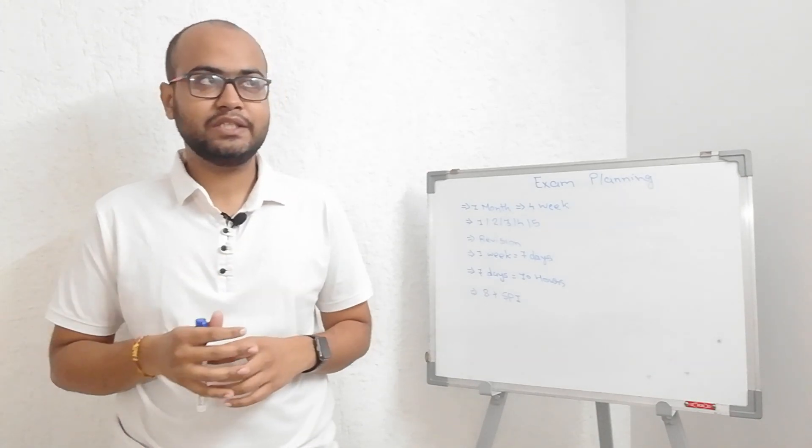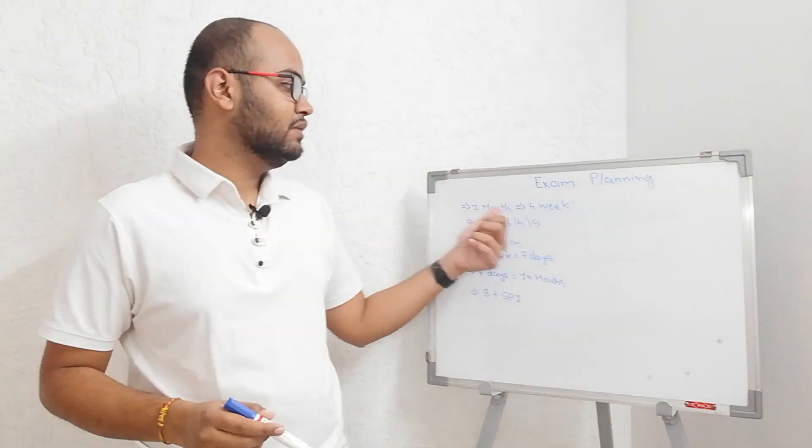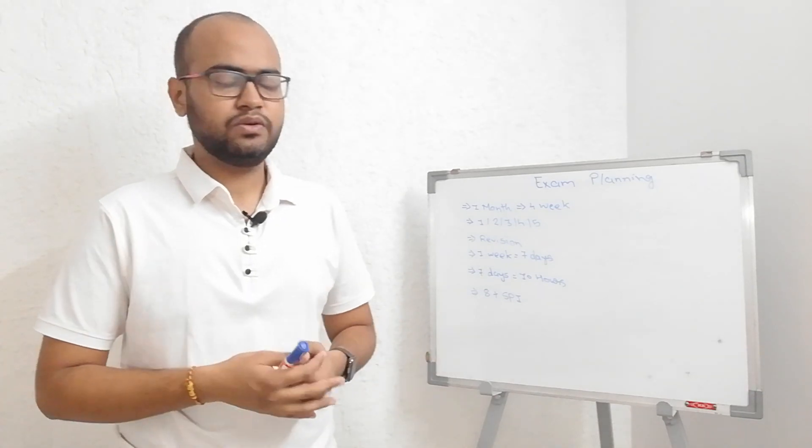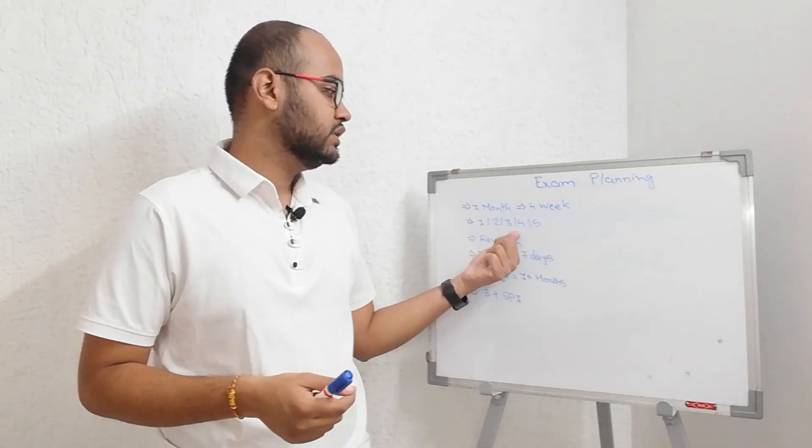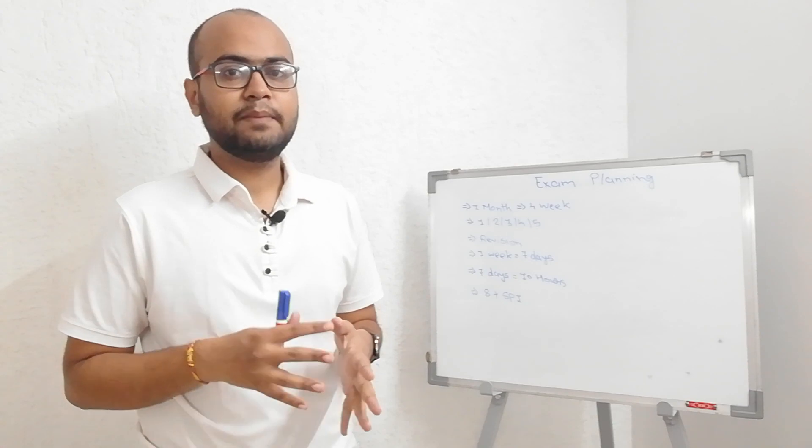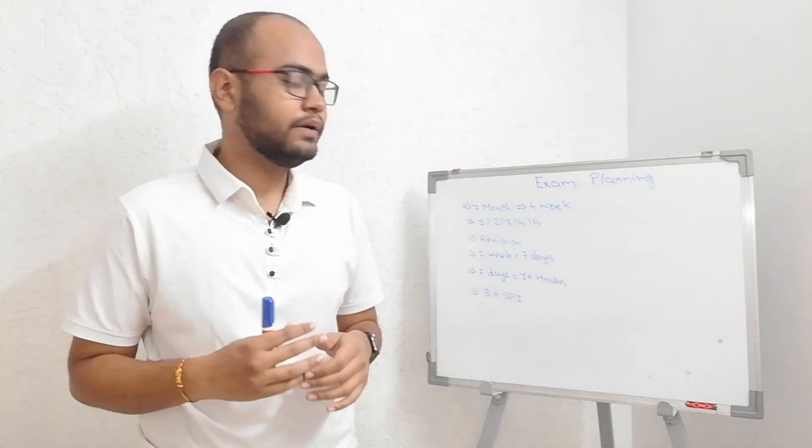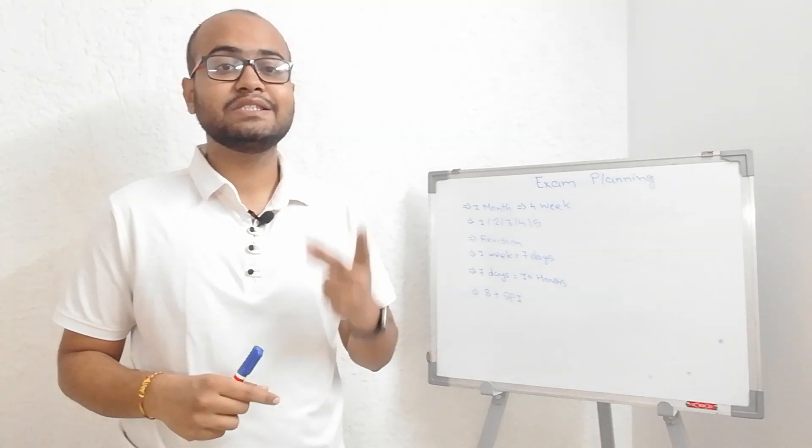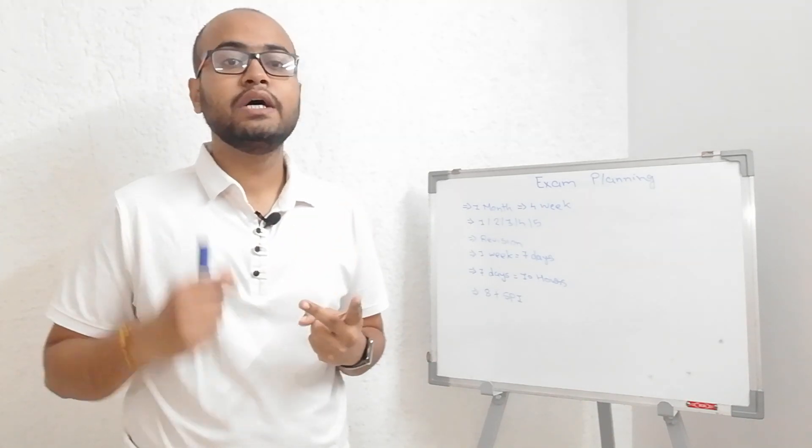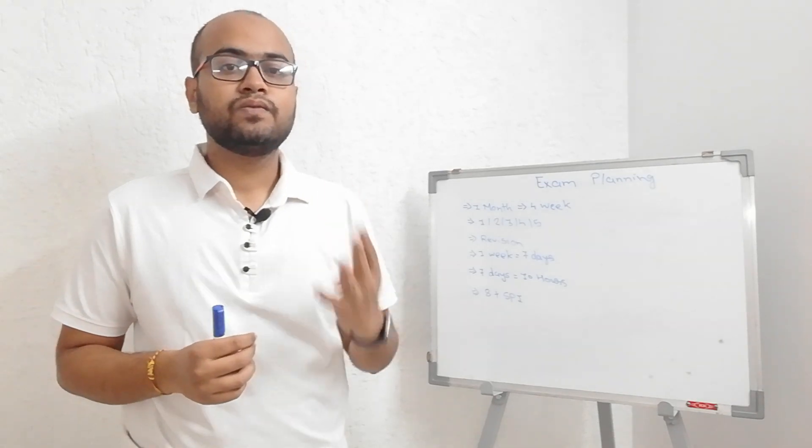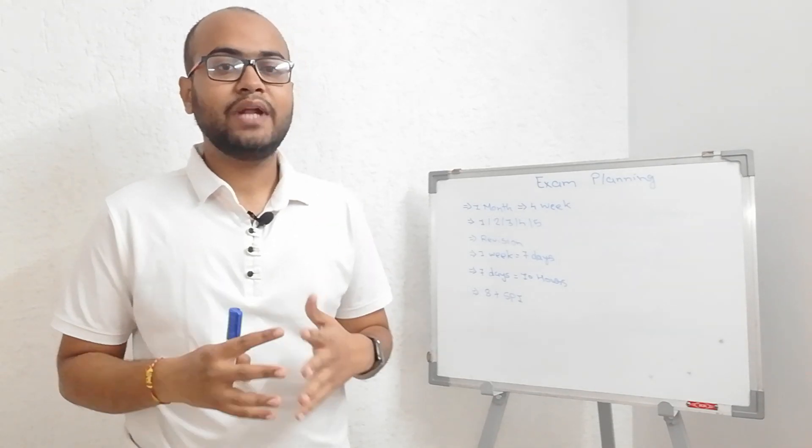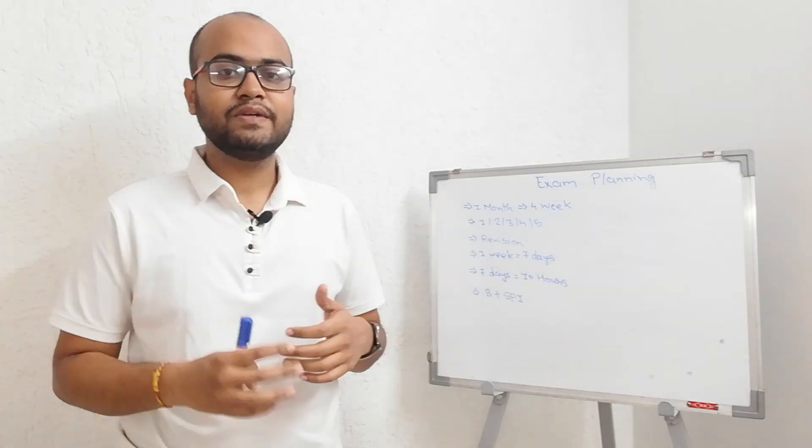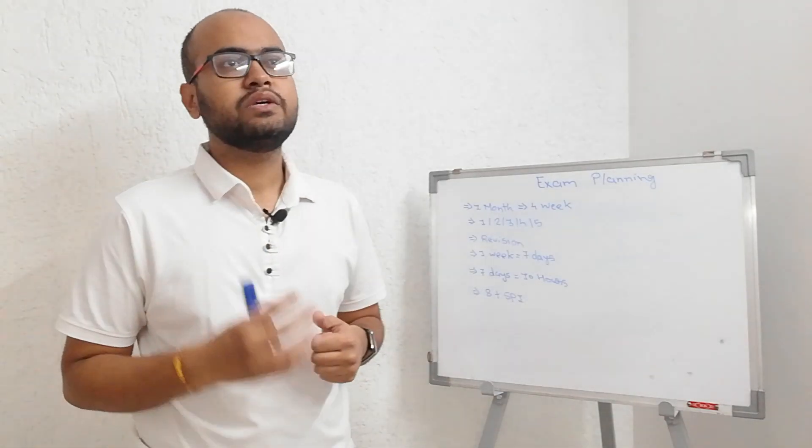One month equals four weeks. Let's say you have five subjects and four to five weeks of time. First week, cover your first subject; second week, second subject; third week, third subject; fourth week, fourth subject; and if you have a fifth week, cover the fifth subject and do revision as well.